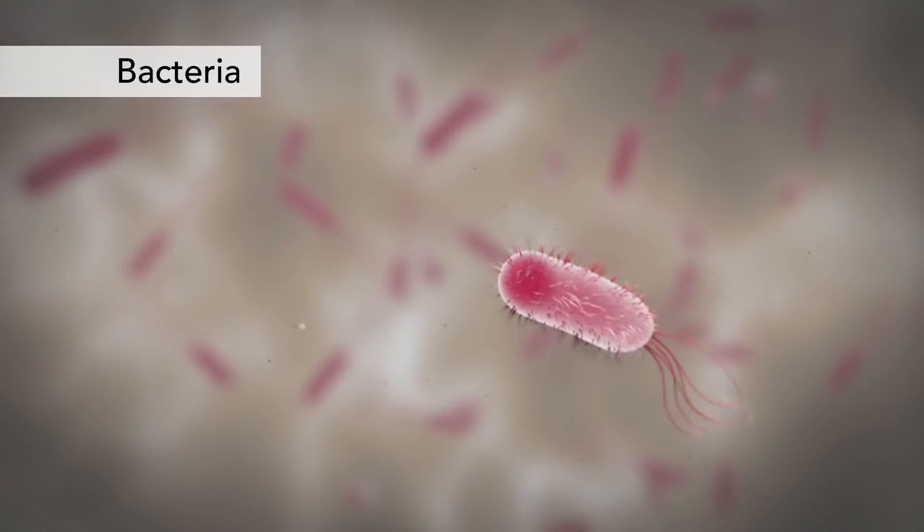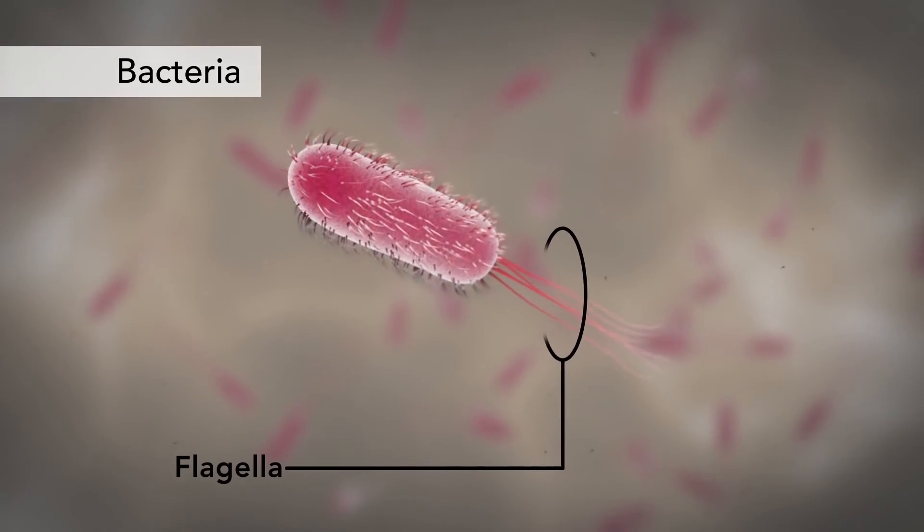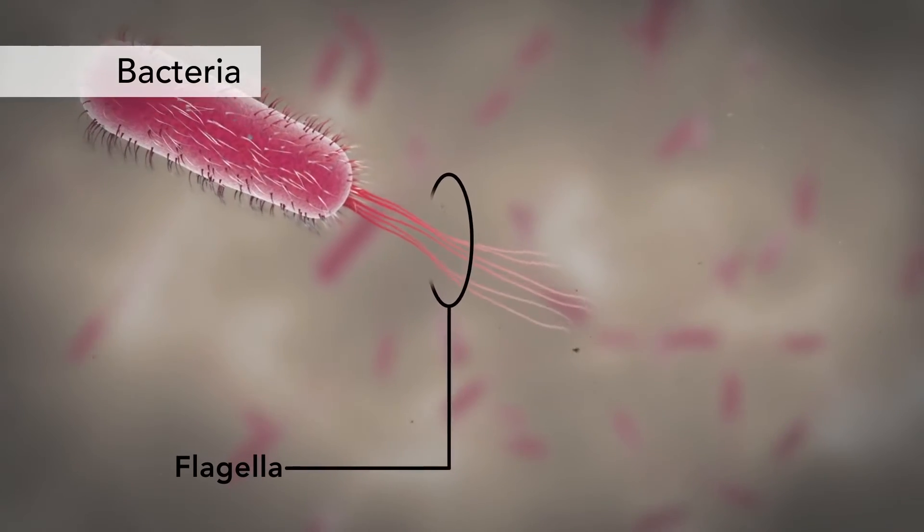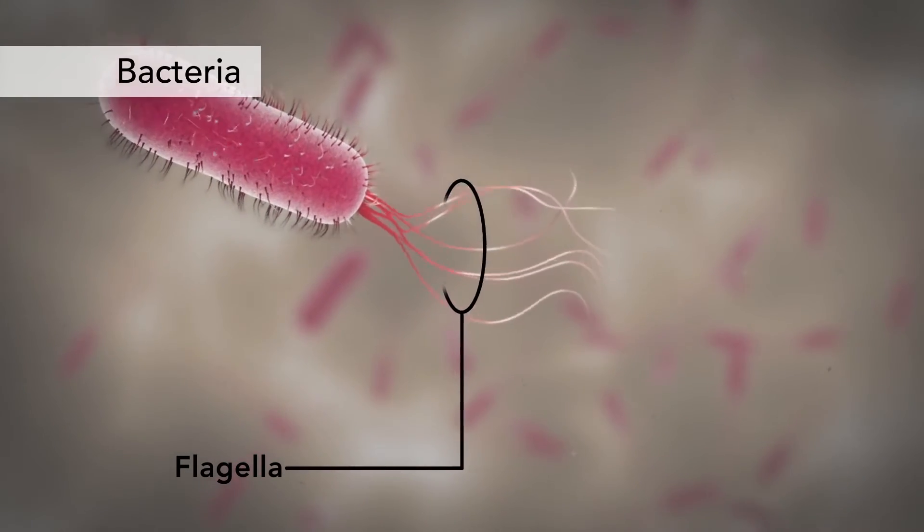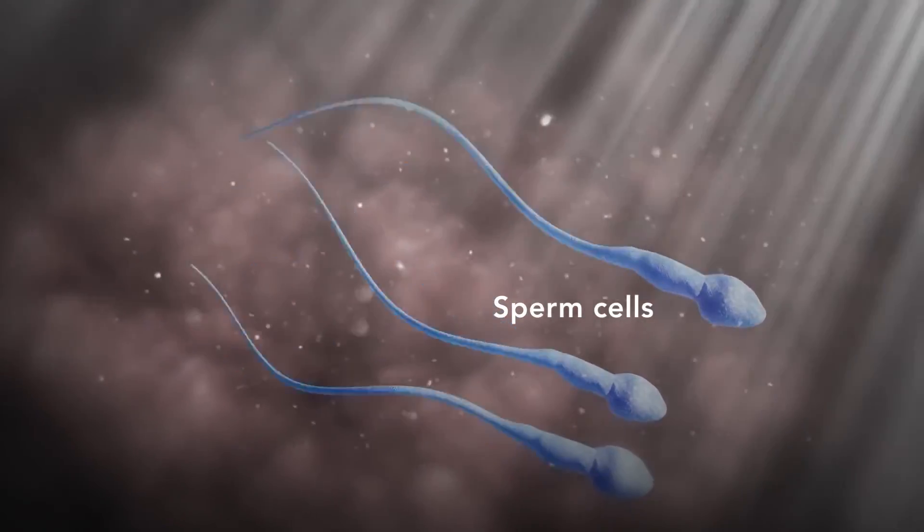Another unique feature in some cells is flagella. Some bacteria have flagella. A flagellum is like a little tail that can help a cell move or propel itself. The only human cell that has a flagellum is a sperm cell.